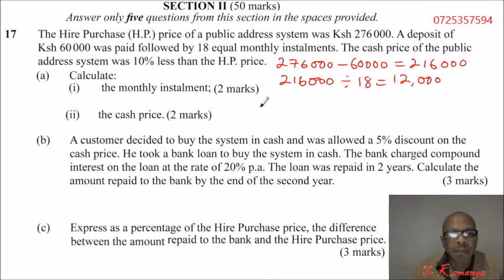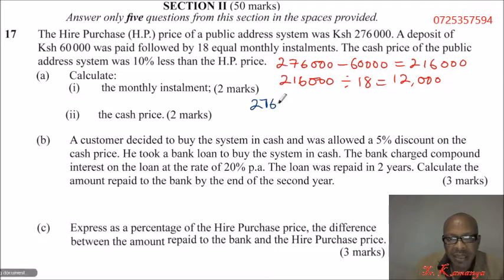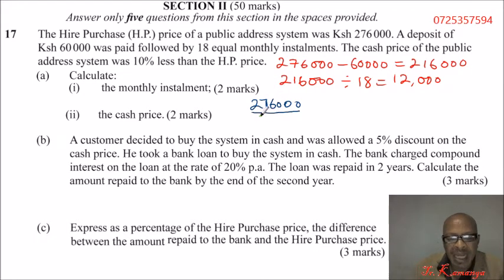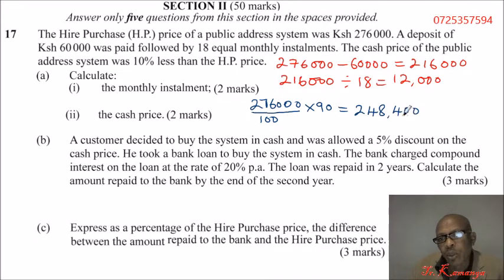Part (a)(ii): the cash price. We are told the cash price was 10 percent less than the hire purchase price. The hire purchase price is 276,000. So you divide by 100 and multiply by 90 percent. Computing that, you get 248,400 shillings. This is the cash price, which is 10 percent less than the hire purchase price.